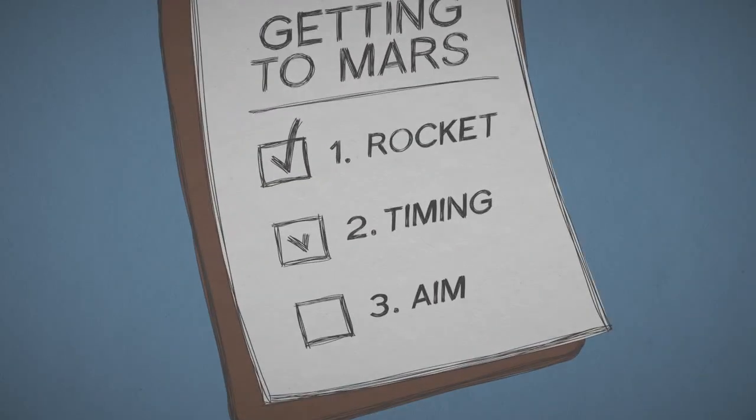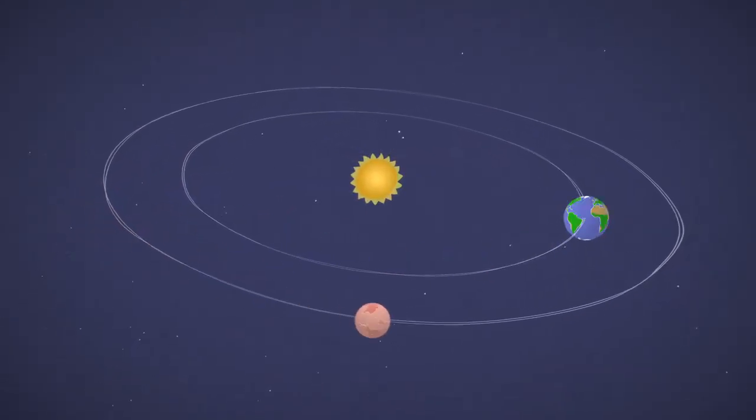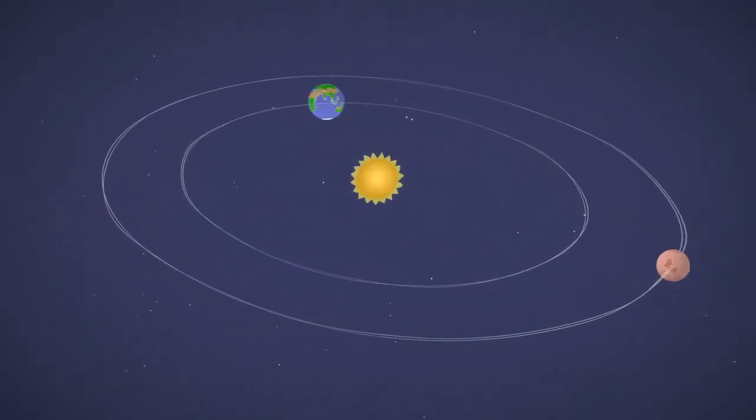Next, make sure you launch at the right time. Mars and Earth orbit the Sun at different speeds and distances. Sometimes they're really far apart, and other times they come closer together.